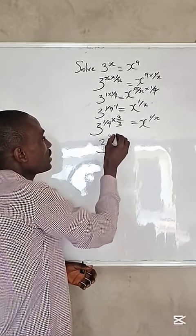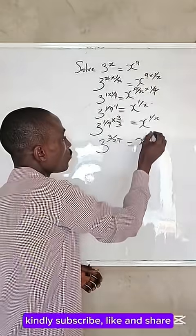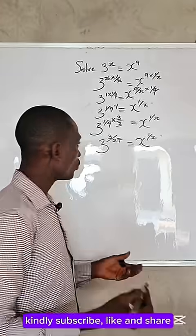From here, we can have 3 raised to the power of 3 divided by 27 equals x raised to the power of 1 over x.